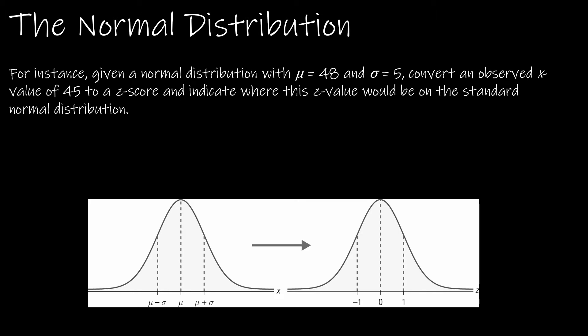Let's take a look at an example. If I have a mean of 48 and a standard deviation of 5, then if I just went one standard deviation in each direction, I would have 43, 48, and 53. And if I'm looking at an observed x value of 45, that would be about right here.